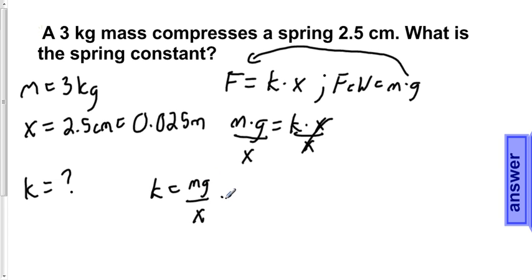If we substitute the numbers in, we get k equals 3 kilograms multiplied by 9.8 meters per second squared